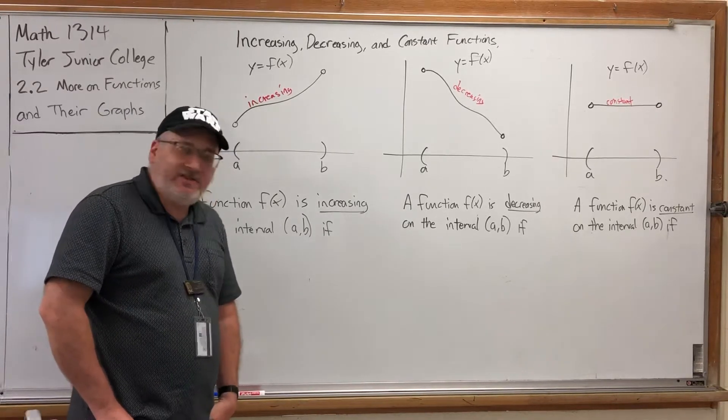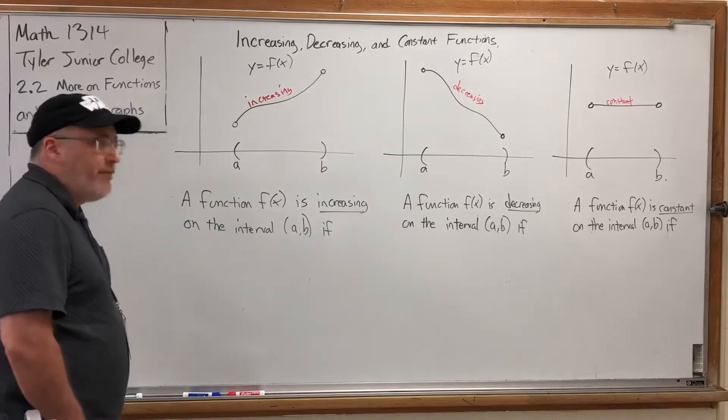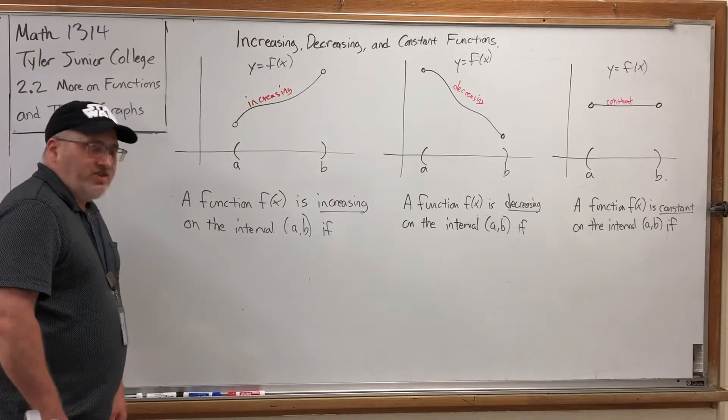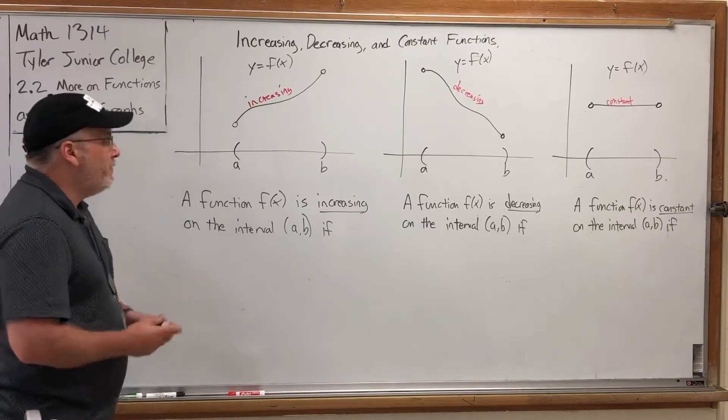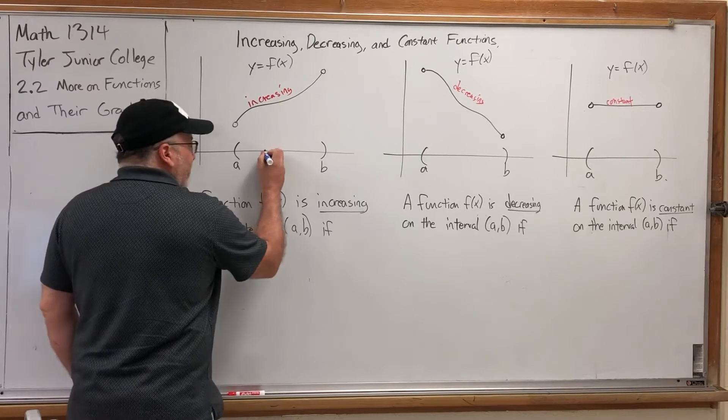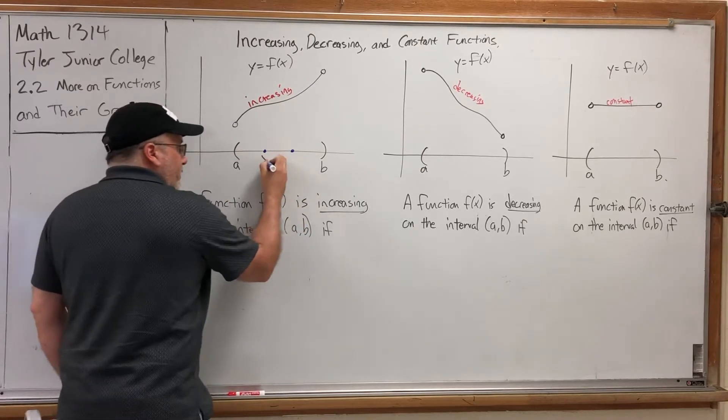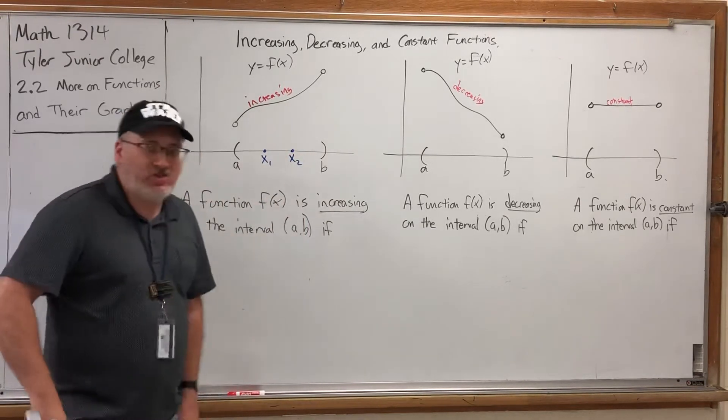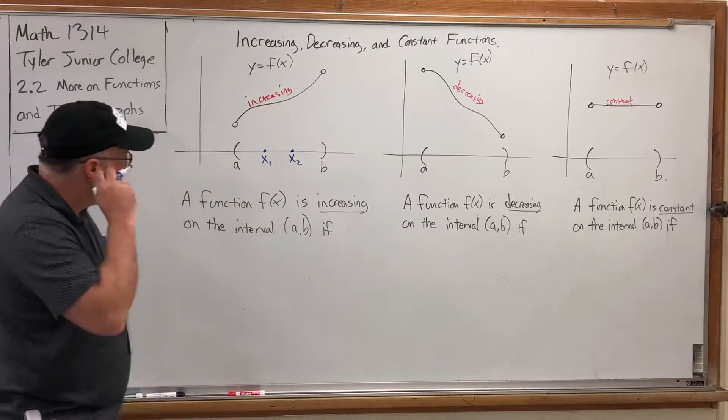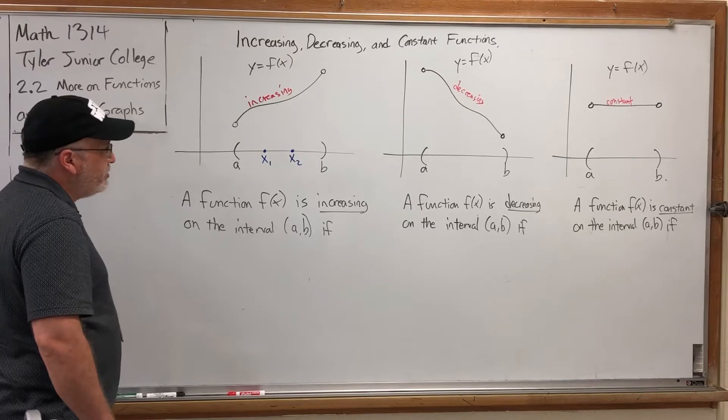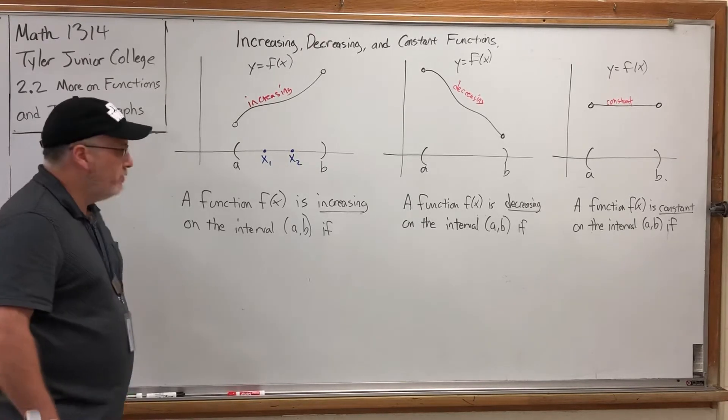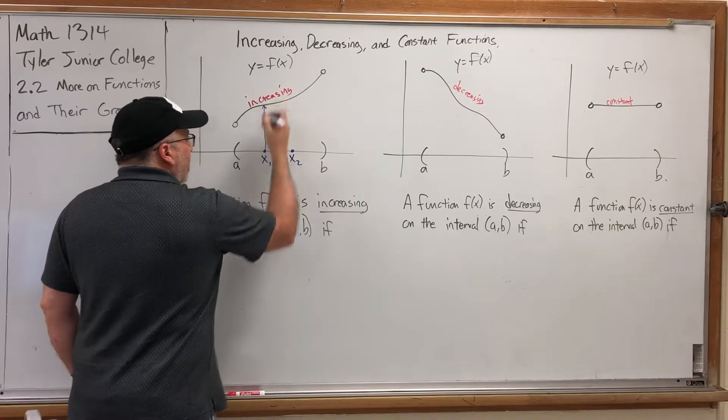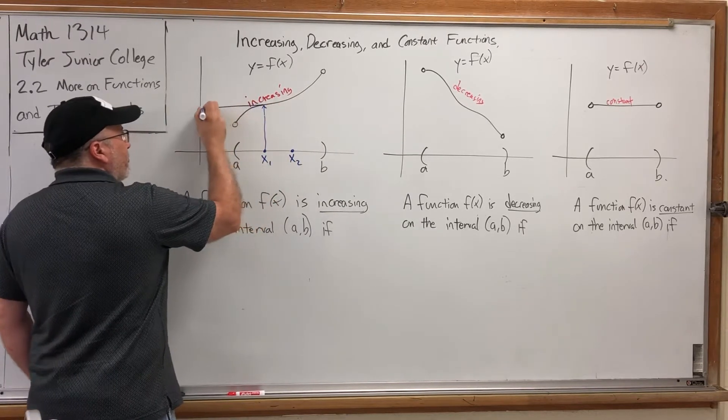So visually it's easy to go increasing, decreasing, constant, but there's a little more rigorous definition. And although you can answer most homework questions without this rigorous definition, for those of you heading towards calculus this definition will show up again. How do we define a function is increasing in terms of its x and y values? Let's think about what we mean from moving from left to right. Let's pretend we pick two x values in the domain. We'll call the first one x1 and the second one x2.